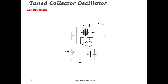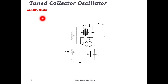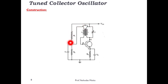Let's move to the next oscillator — the Tuned Collector Oscillator. It is named so because at the collector there is a tuned circuit, which is the reason it is called the tuned collector oscillator.